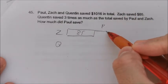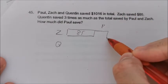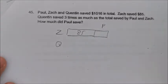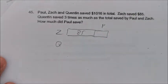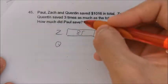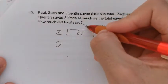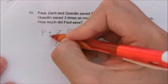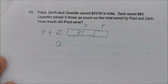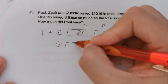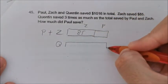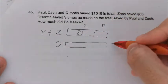So Paul, I just let it be one unit. This is Paul and Zach — maybe I put Zach here. Then this represents Paul plus Zach. So Quintin has three times as much as the total of Paul and Zach, so Quintin we have three times of this.